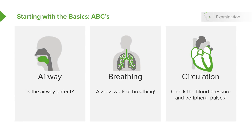Circulation is the last part of the ABCs. You want to check blood pressure, peripheral pulses, and feel whether the patient's skin is cool, warm, or clammy. Before moving on to anything else, we start with the ABCs. If we detect a problem in any component — airway, breathing, or circulation — we stop and fix that problem first. If we detect an airway problem, we stop at A, fix it with potentially intubation, and don't move on until all problems are resolved.